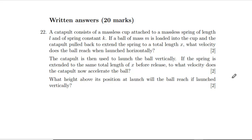Alright, here we are continuing with the 2011 PAT written answers in the physics section - not including the long one but the mid-length ones. Question 22: A catapult consists of a massless cup attached to a massless spring of length l and spring constant k. If a ball of mass m is loaded into the cup and the catapult is pulled back to extend the spring to a total length x, what velocity does the ball reach when launched horizontally?